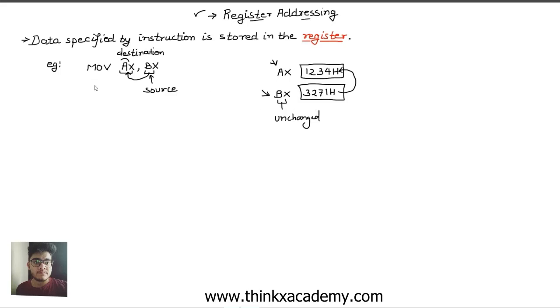More examples of register addressing can be the ADD instruction, where we will not specify the direct data but will specify the registers. Let's say ADD AL, BL. We know that AL and BL are basically the lower bits of the AX and BX register. So this instruction will add the contents of AL and BL and store it inside AL.